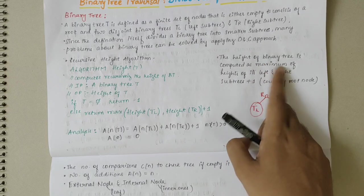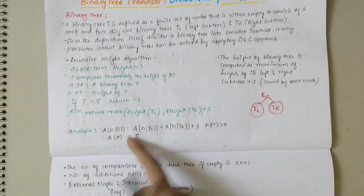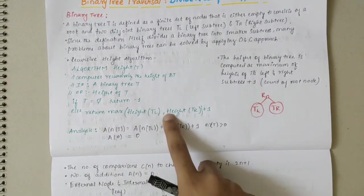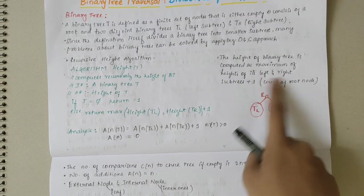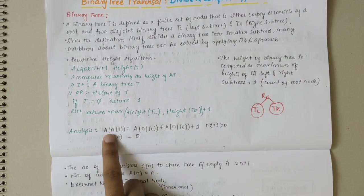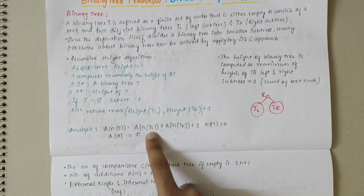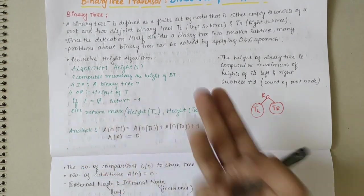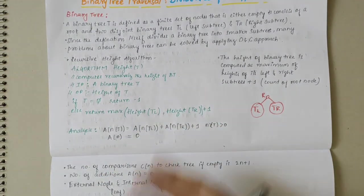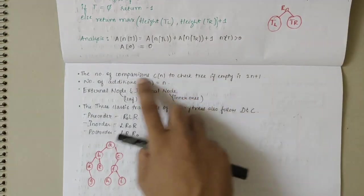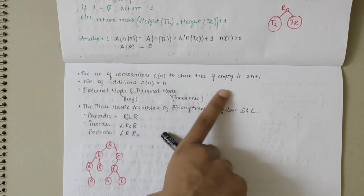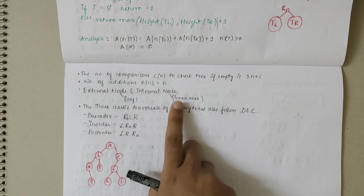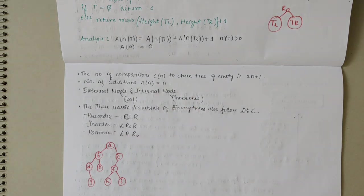The height of a binary tree is computed as the maximum of the height of its left and right subtrees, which are recursively evaluated. The analysis shows the number of comparisons C(n) to check if the tree is empty is 2n+1, and the number of additions is n, where n is the number of internal nodes and leaf nodes are the external nodes.